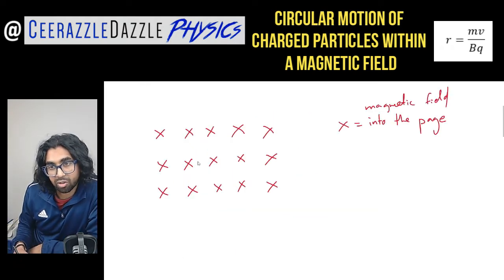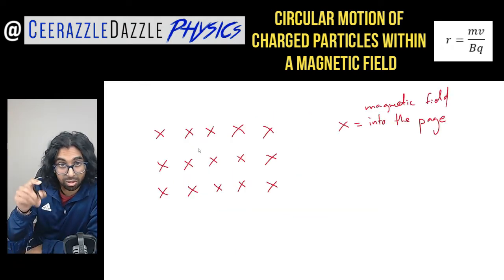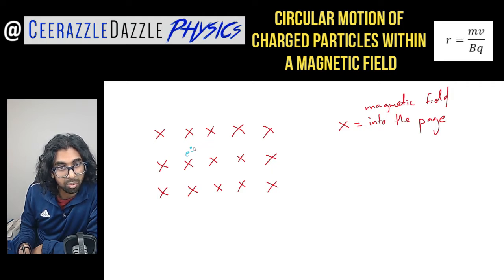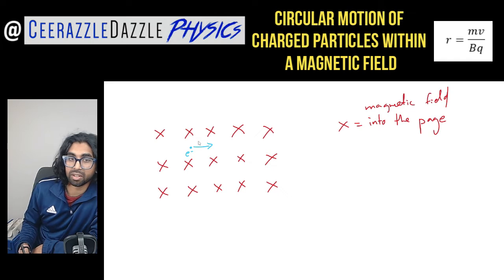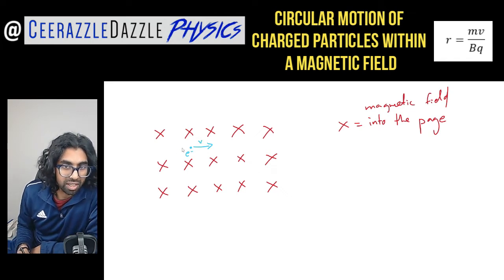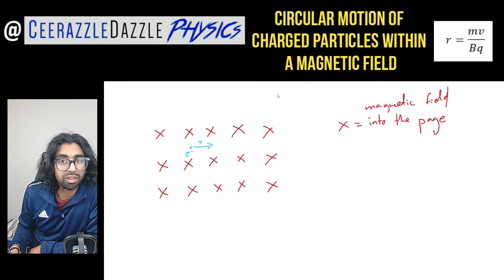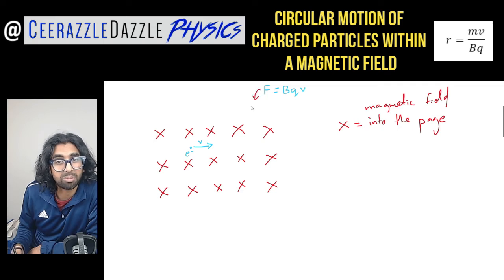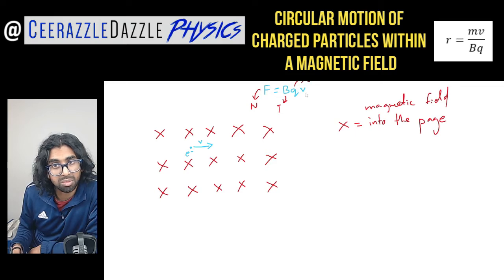I've drawn the following diagram. We've got a magnetic field going into the page here — cross equals the magnetic field into the page. We're going to fire an electron in this direction. We already know that the force on this charged particle will be given by F equals BQV, where F is measured in newtons, magnetic flux density B is in Tesla, Q is in coulombs, and the velocity is in meters per second.